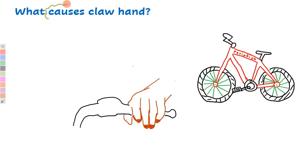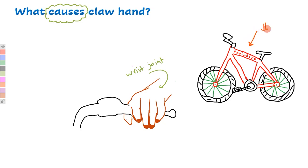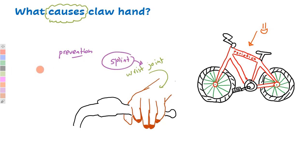What can cause claw hand or ulnar claw? People engaged in repetitive actions involving pressure to the palm of the wrist joint — such as riding bicycles or motorcycles — are more prone to develop ulnar claw. Prevention can be done by applying splints to the wrist joint, and by doing regular exercises to strengthen the intrinsic muscles of the hand, especially the interosseous muscles and the lumbricals.